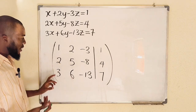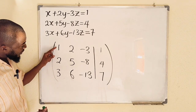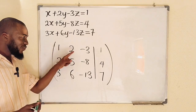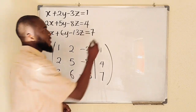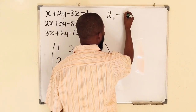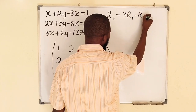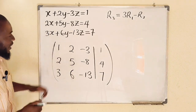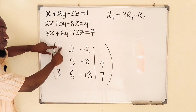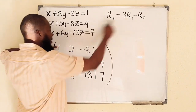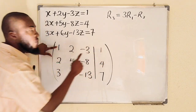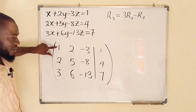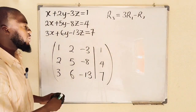I would like to start by eliminating the entry in row 3. If I multiply row 1 by 3, the leading entry becomes 3, and 3 minus 3 gives zero. So new Row 3 = 3 × Row 1 − Row 3. One times 3 is 3, and 3 minus 3 gives zero. I'll multiply all entries in row 1 by 3 and subtract row 3 to obtain the new row 3.